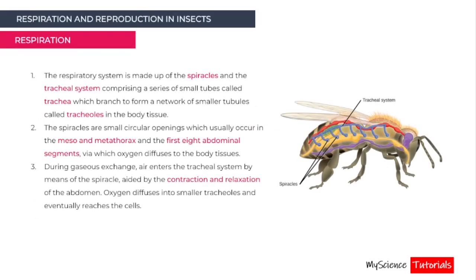The respiratory system is made up of spiracles and a tracheal system comprising a series of small tubes called tracheae, which branch to form a network of smaller tubes called tracheoles in the body tissues. The spiracles are small circular openings usually occurring in the meso- and metathorax and the first eight abdominal segments, through which oxygen diffuses into the tissues. Air enters the tracheal system through the spiracles, aided by the contraction and relaxation of the abdomen.